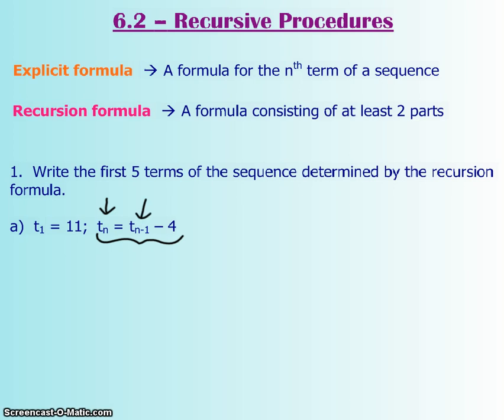The only thing is there's this other part that we didn't have before. This is your second part, and that requires t_{n-1}, which means your previous term's value.